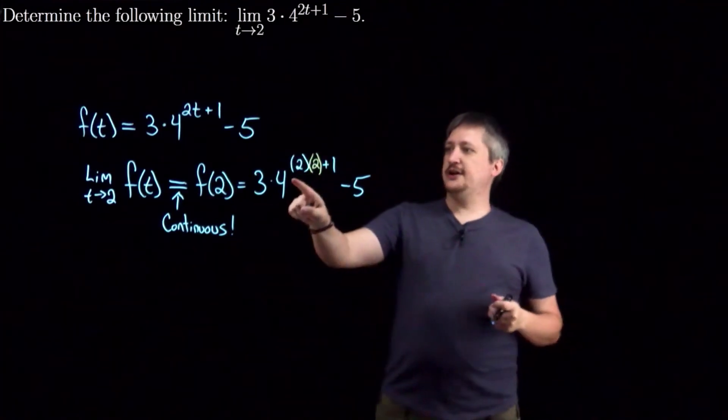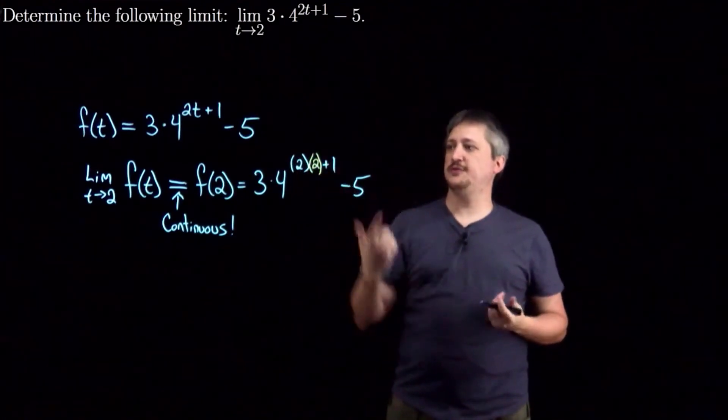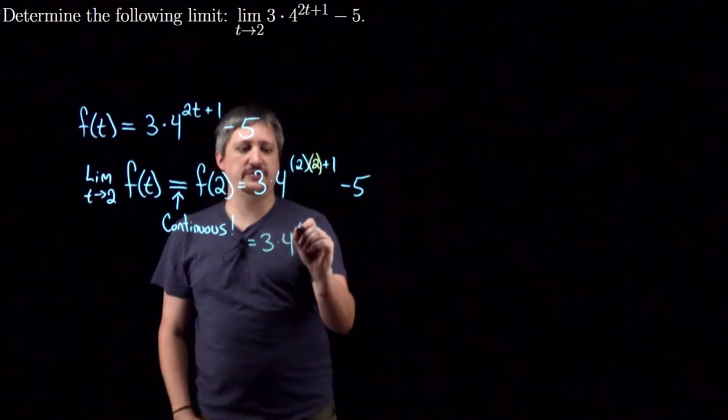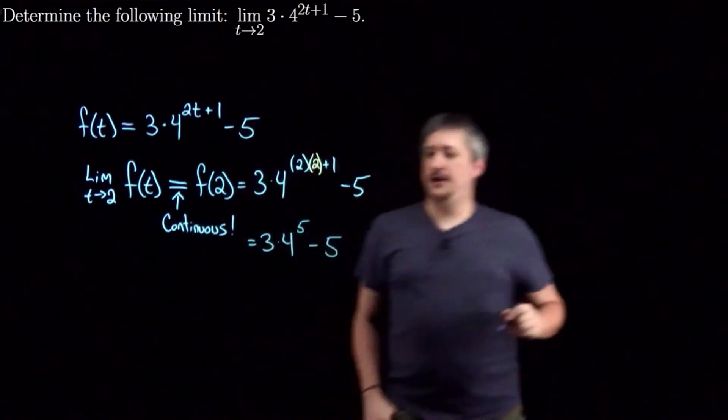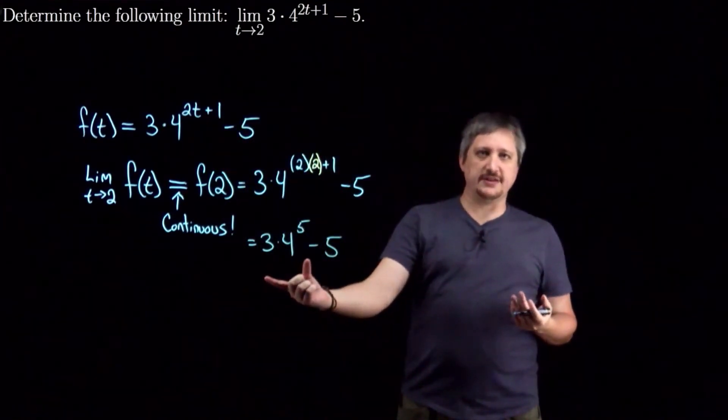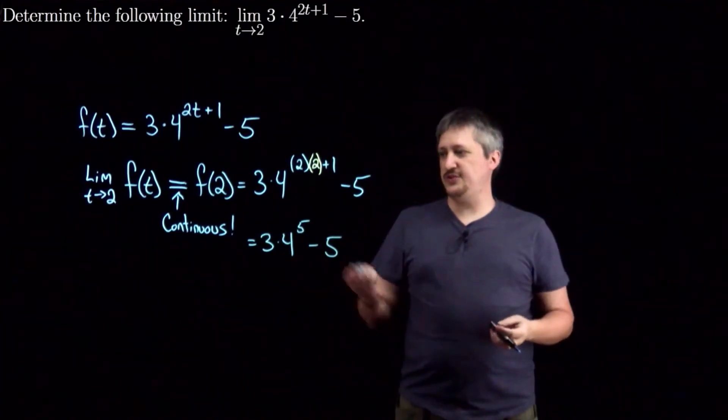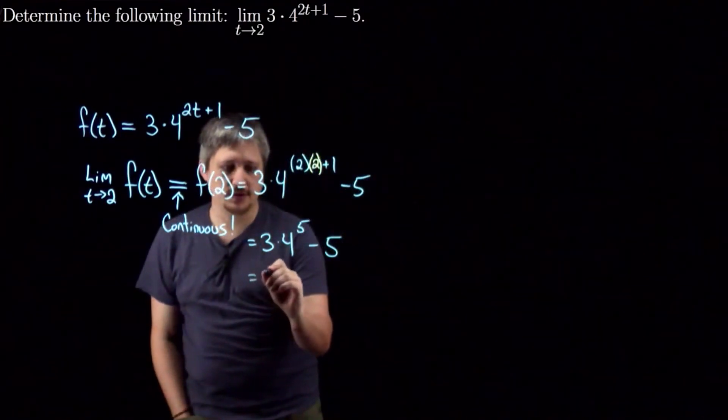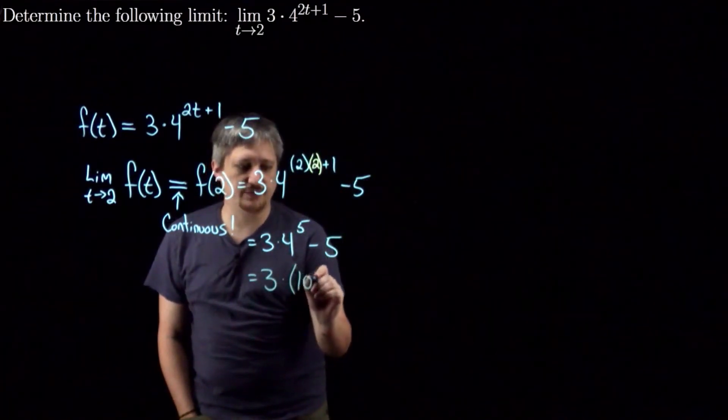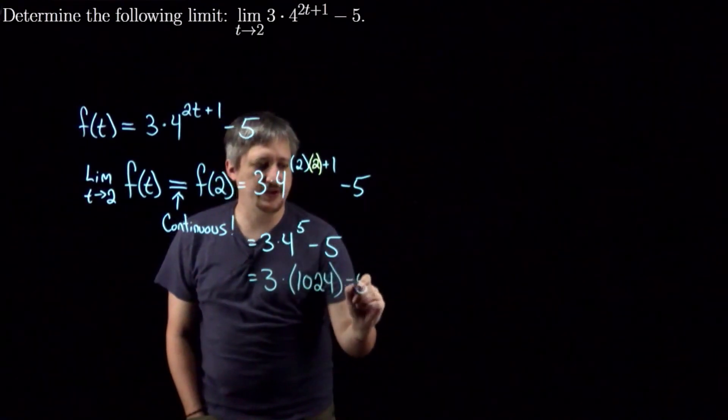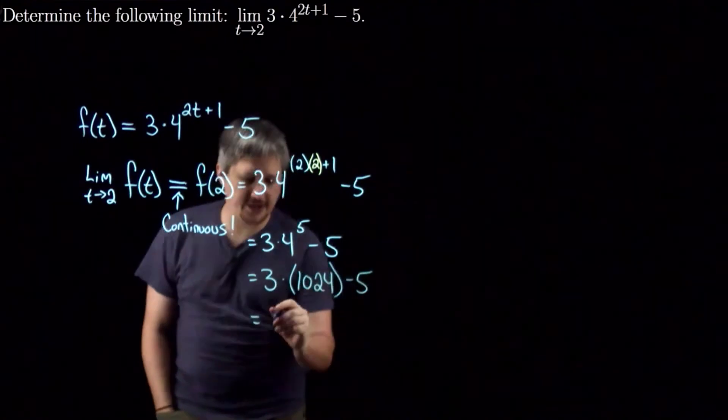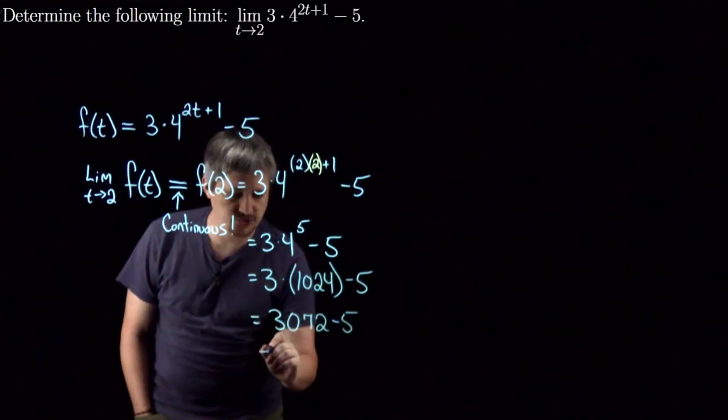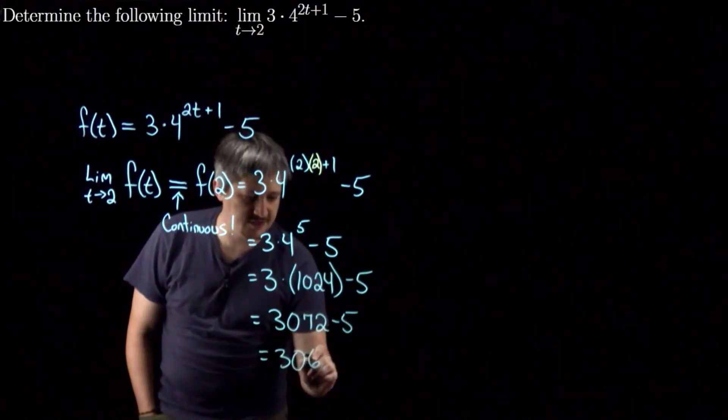So here I have 2 times 2. So that's 4 plus 1 is 5. So this equals 3 times 4 to the 5 minus 5. In most cases, you could keep it like this, but if you really want to go crazy, I guess you could compute that. So 4 to the 5th, that's going to be 16 squared is 256 times 4. So this is going to be 3 times 1024 minus 5, which, multiplying that, I get 3,072 minus 5, which is 3,067.